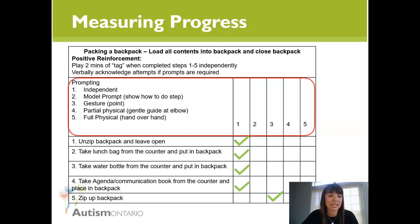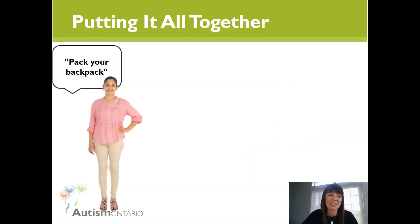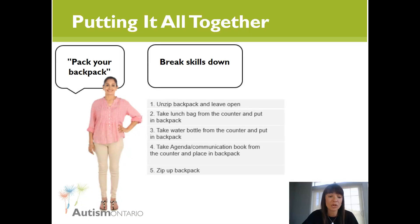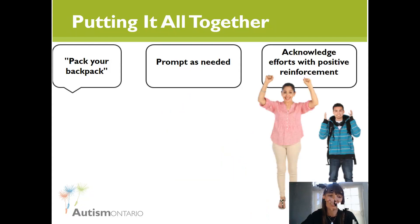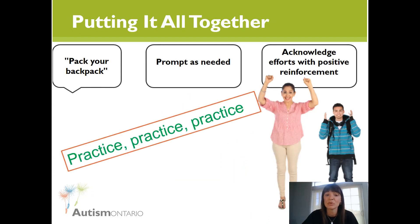To summarize the framework: first, identify your target skill and cue your child to complete it; break the skill down into smaller components if needed; decide whether to use total task, forward, or backward chaining; prompt as needed using a method that works for your child; acknowledge efforts with positive reinforcement; and finally, practice repeatedly — because repetition is key. It provides opportunities to improve and learn and trains our brains to respond to the environment in new ways.